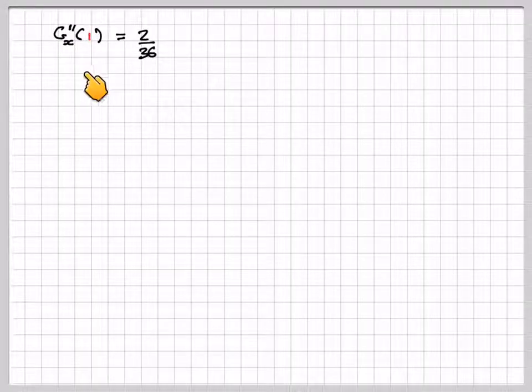G''(1) is going to be 2 over 36. It doesn't matter what value this is, it's always going to be 2 over 36 in this case.